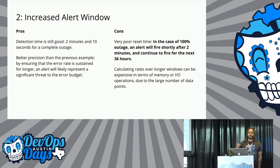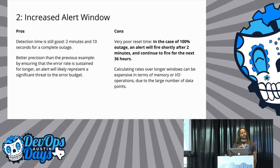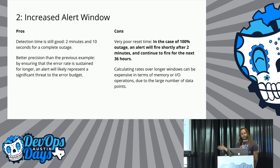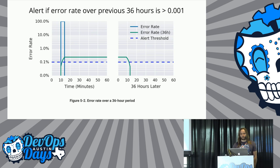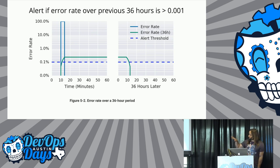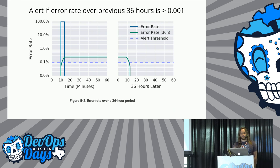In case of a 100% outage, an alert will fire shortly after two minutes, and then it will continue to fire for the next 36 hours. This figure shows that while the error rate is the actual blue spike, the error rate alert — the green one — is what is going to trigger an alert for 36 hours.